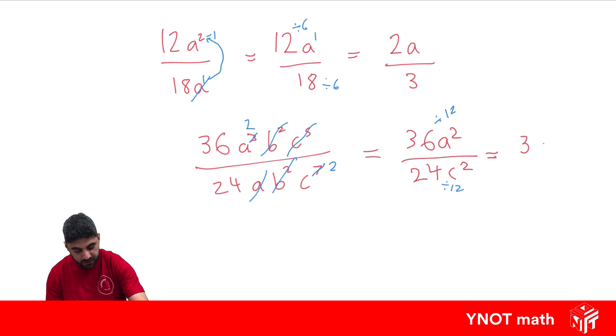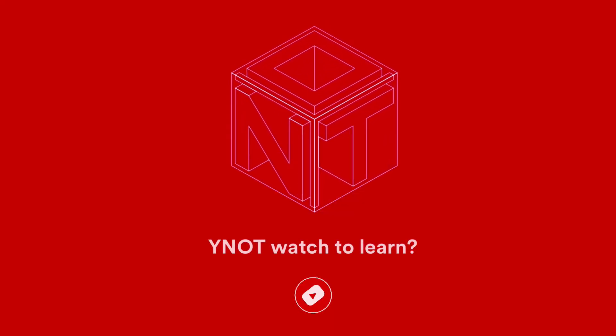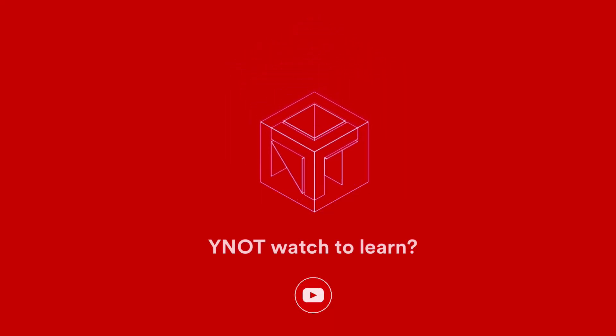36 divided by 12 is 3, so we've got 3a squared over 24 divided by 12 is 2, and we've still got the c squared. And that's our final answer. Thank you.